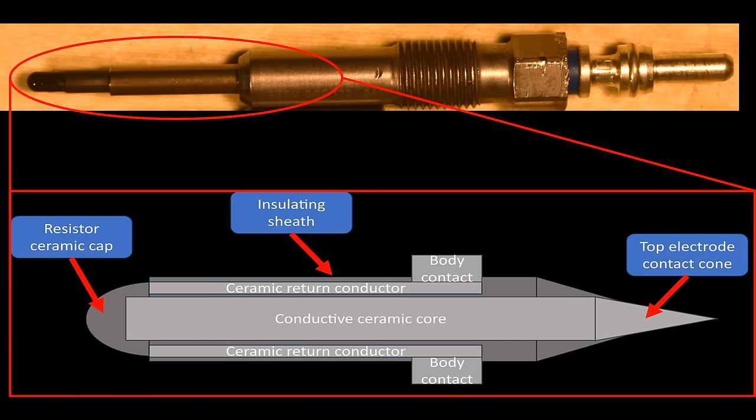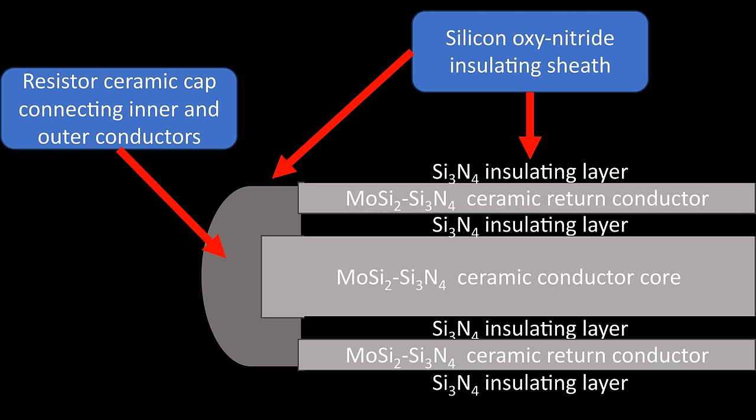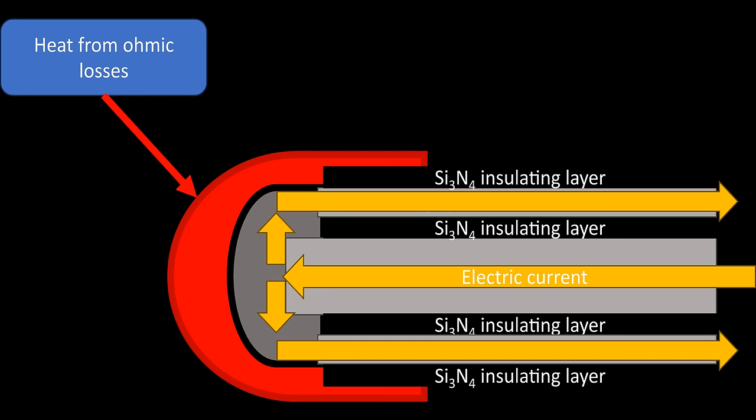So as you can see here, the ceramic body of the glow plug has a conductive ceramic inner core and an outer ceramic conductor. The outer conductor conducts through the body of the glow plug, the fat section, and the ceramic core is connected to a tapered region at the back. The inner and outer conductors are separated by a silicon nitride insulating layer, as is the outside from the outer conductor.